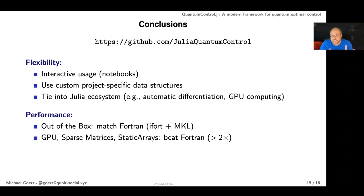For performance, out of the box we actually match Fortran with commercial compilers. If we start to use GPUs, Julia sparse matrices, or StaticArrays, we actually beat Fortran by at least a factor of two. To be honest, when we started working with Julia it was actually for these aspects of flexibility and we didn't really expect that we would get quite this performance, but it turns out that's what it is.